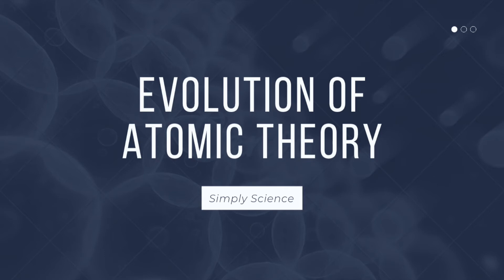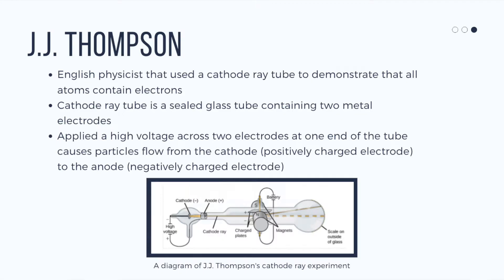After Dalton's atomic theory, more scientists performed experiments that resulted in more detail and information regarding the atom. One of the scientists was J.J. Thompson. He used the cathode ray tube to demonstrate that atoms contain electrons.